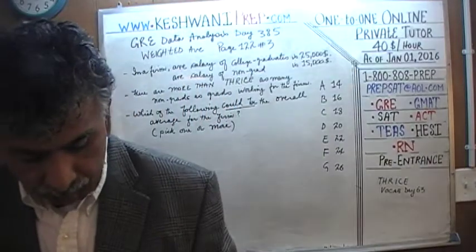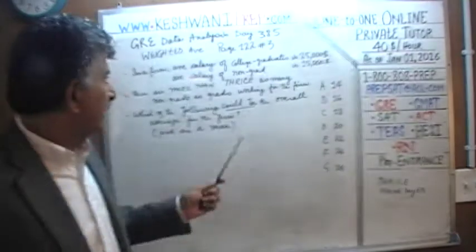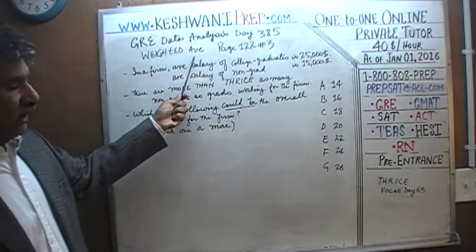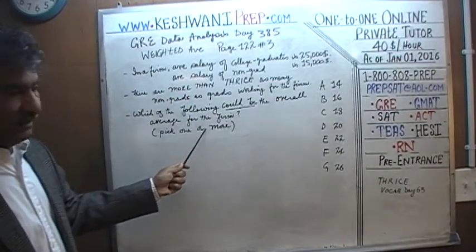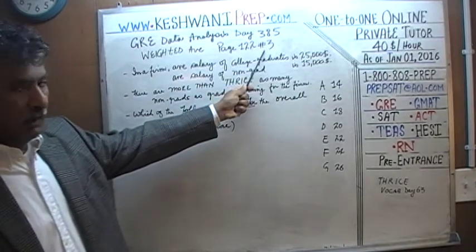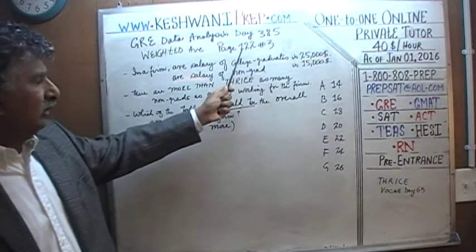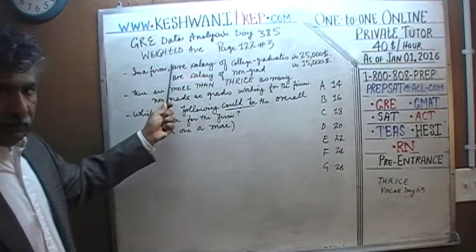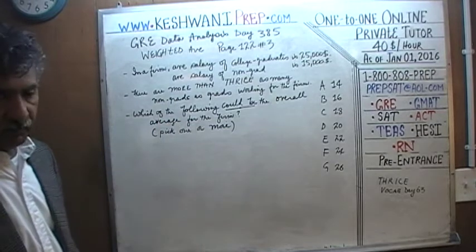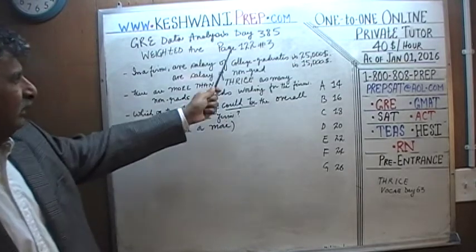Today, what we will do is a continuation of what we did yesterday, which was the topic of weighted average. The problem we are going to do today is not the same problem as what you see on page 122, problem number 3, which is what we did on day number 384. Today we are going to do a problem on the same topic, but a little bit different one — instead of twice as many, we have more than thrice as many people.